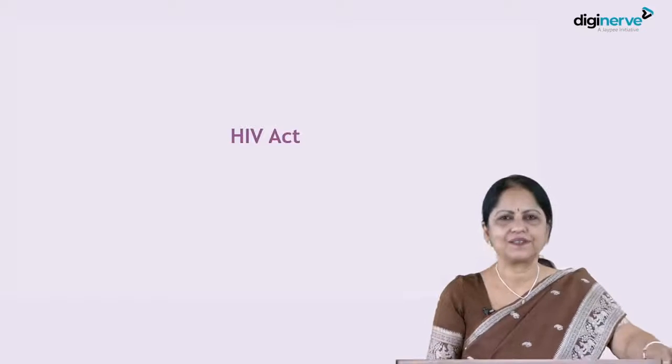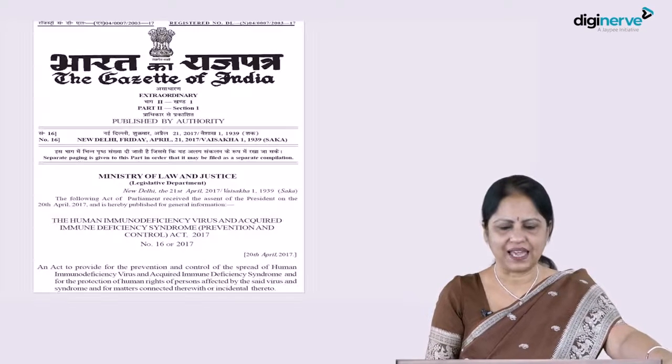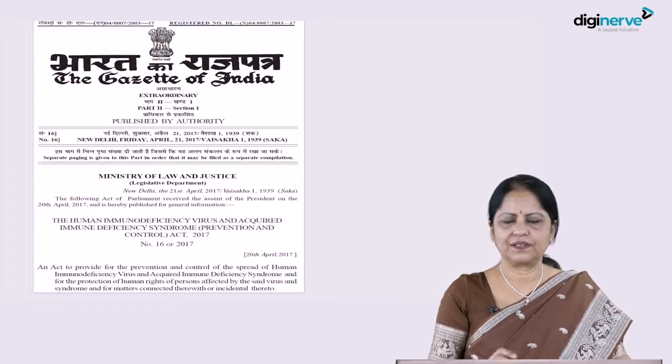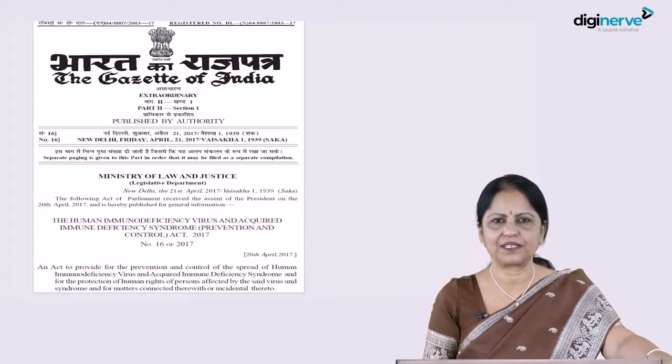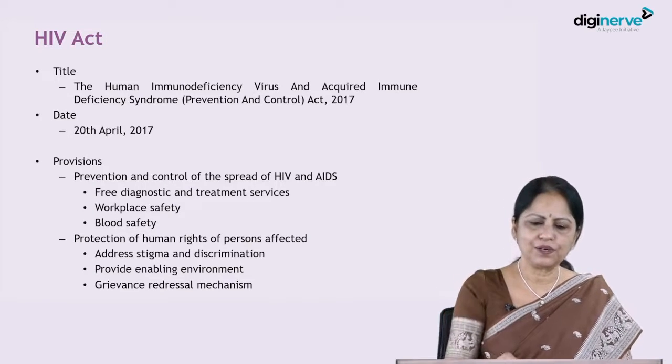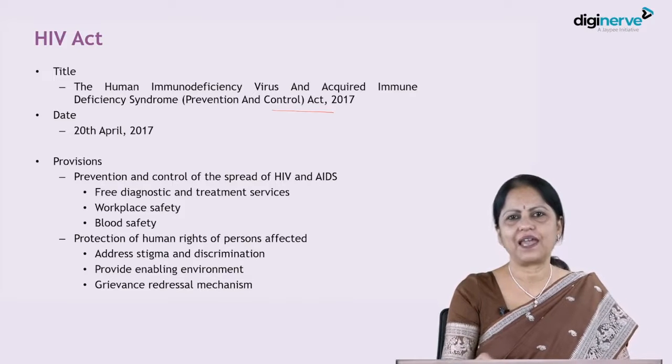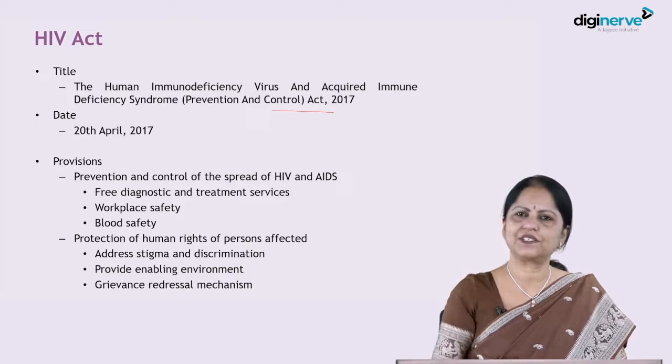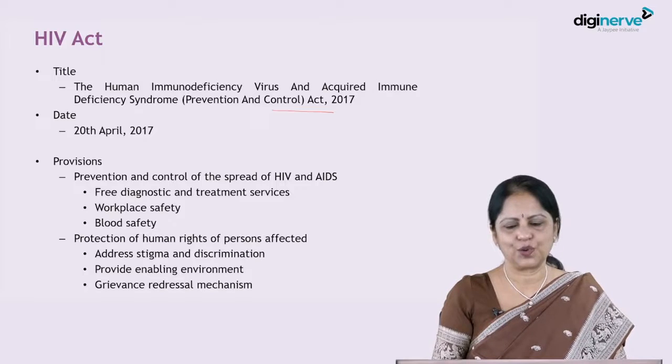The basic approach to control involves two instruments: one is legislation and the other is a national program. The legislation is the HIV Act. This is the Gazette where this act has been published. The title is the Human Immunodeficiency Virus and Acquired Immune Deficiency Syndrome Prevention and Control Act 2017, and it was enacted on the 20th of April 2017.